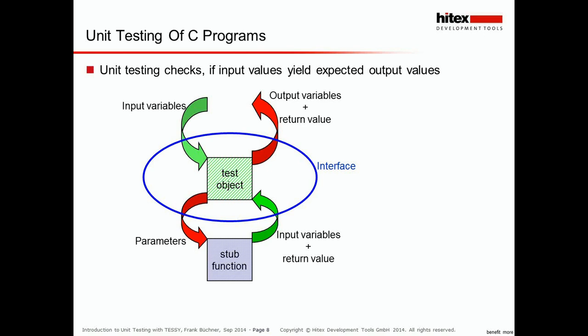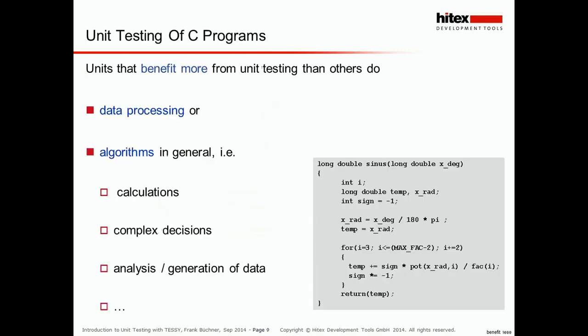Some functions benefit more from unit testing than others. Functions that benefit most are those which do calculations, complex decisions, analysis of data, generation of data — data processing in general. Unit testing tests the logic and algorithmic behavior of a unit under test, and the more logic and algorithmic behavior a unit has, the better suited and the more necessary unit testing is for it.